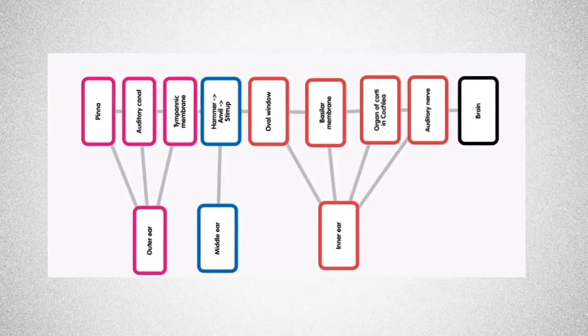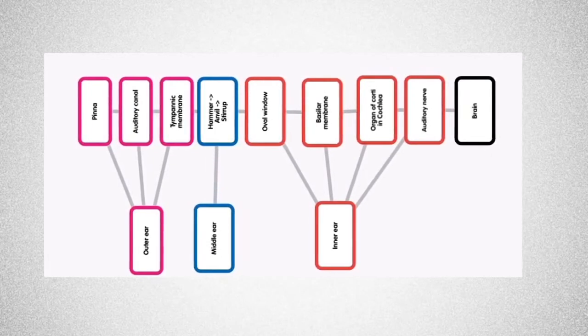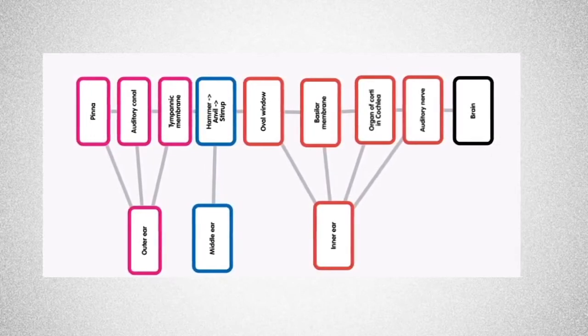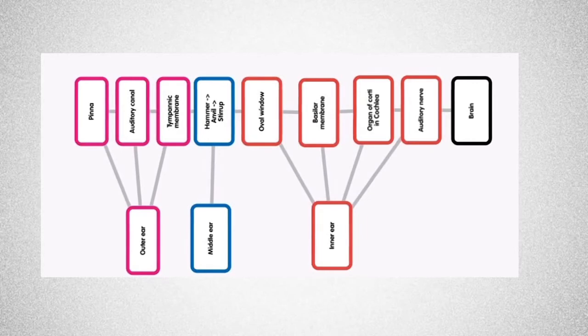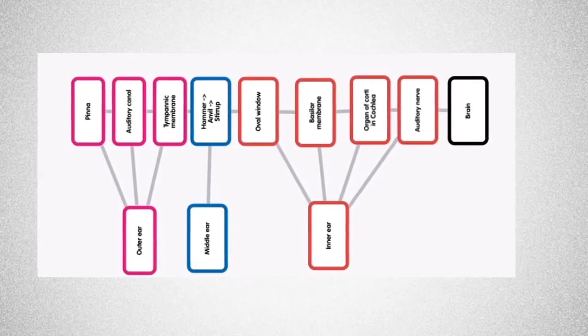This helps to change and vibrate the basilar membrane, which stimulates the hair cells of the organ of Corti, which are inside our cochlea. This then sends a message along the nerve fibers to the brain where they are interpreted.